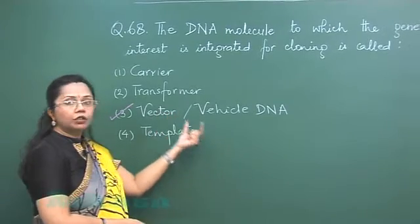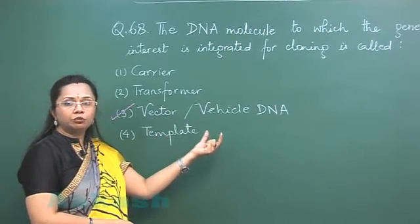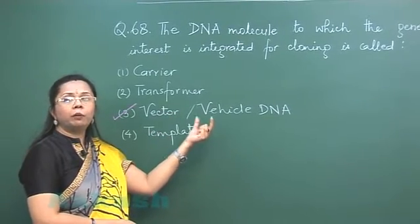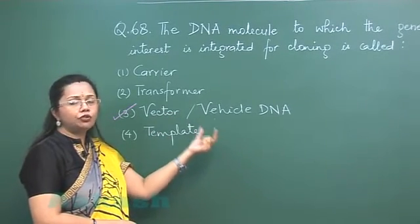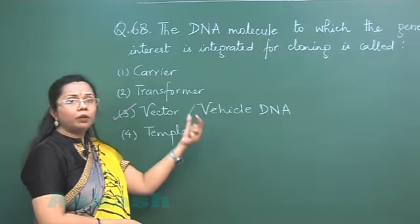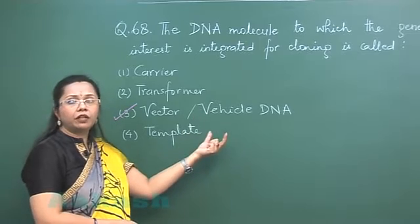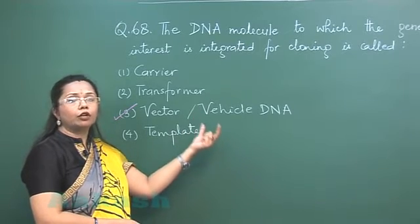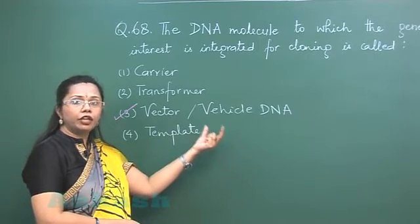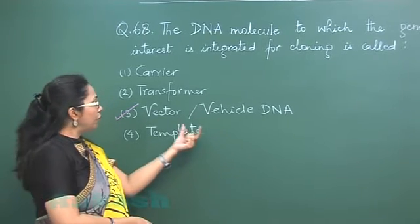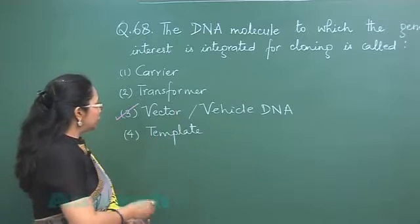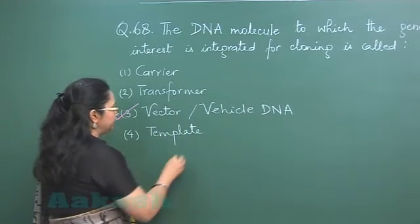This vector could be a plasmid, it could be a bacteriophage, or many other different vectors such as cosmids and phagemids. So our answer is 3.